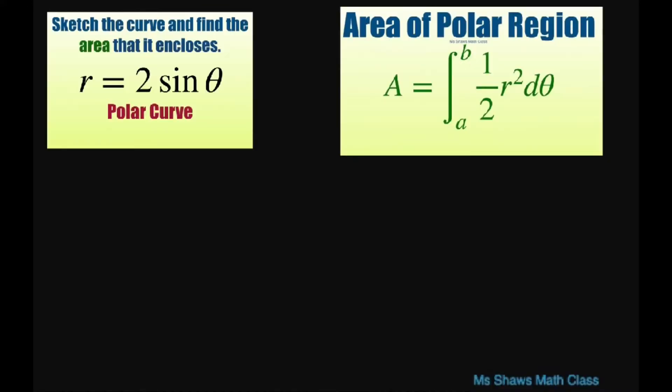Set up the area. Our area is going to be equal to the integral from 0 to pi of 1 half, using this formula, r squared d theta. So our r is 2 sine of theta. Therefore, this is going to equal the integral from 0 to pi. I'm going to go ahead and pull the 1 half in front. And this is going to be 4 sine squared of theta d theta.